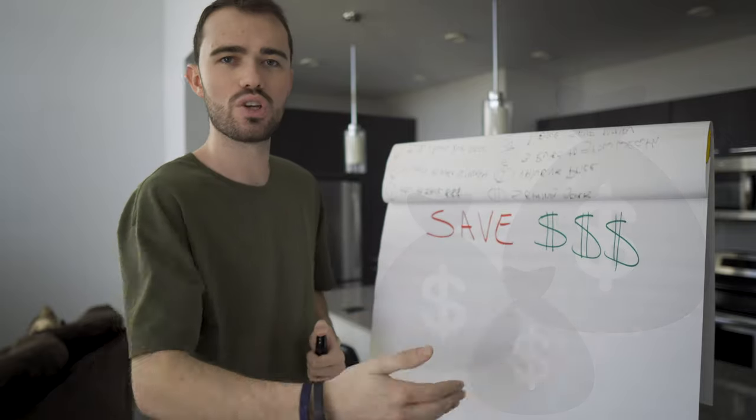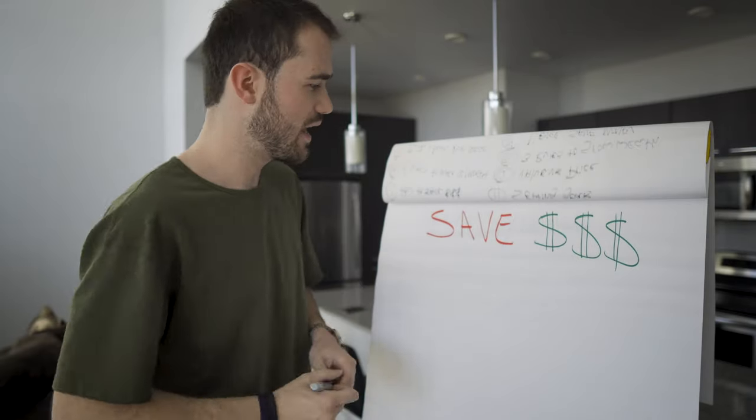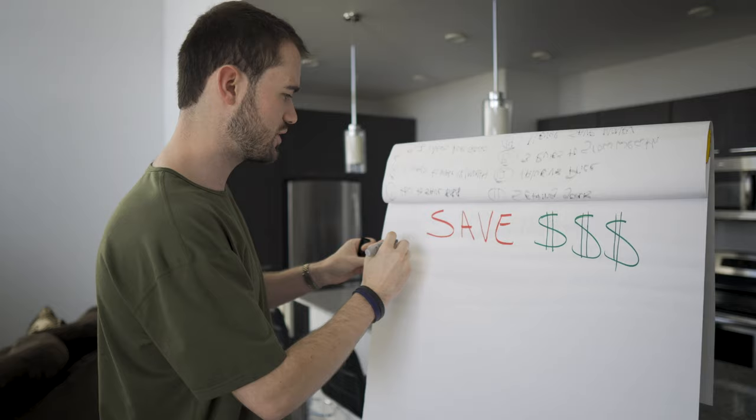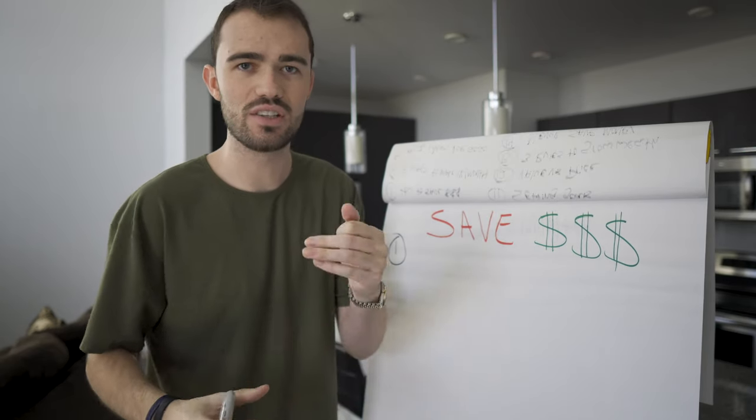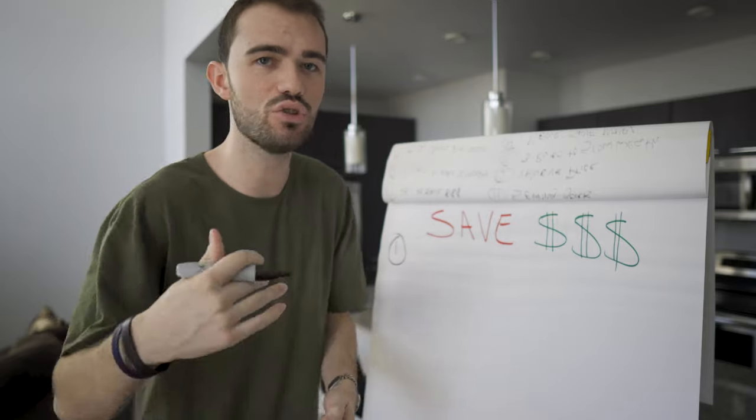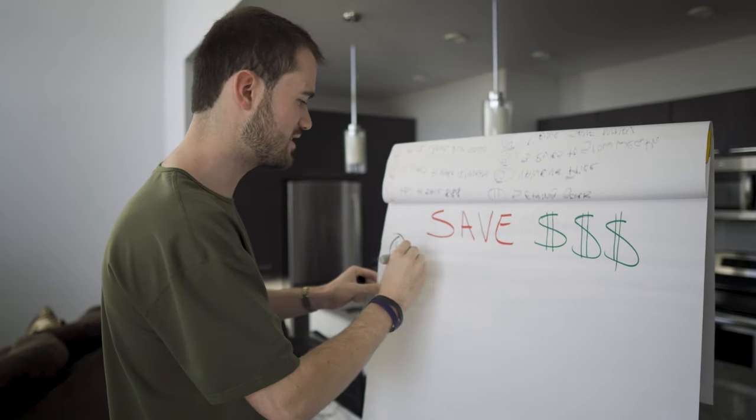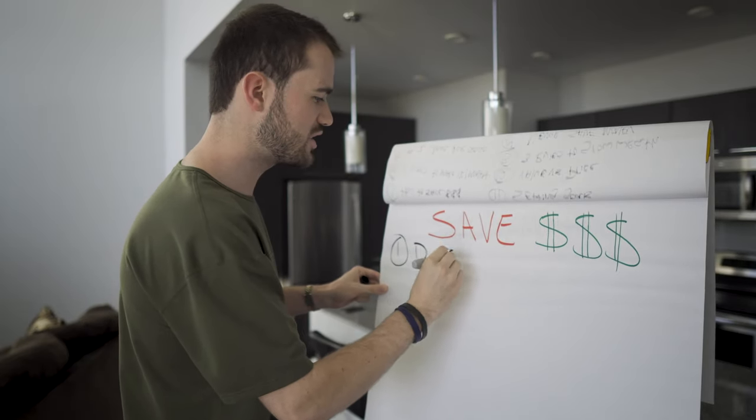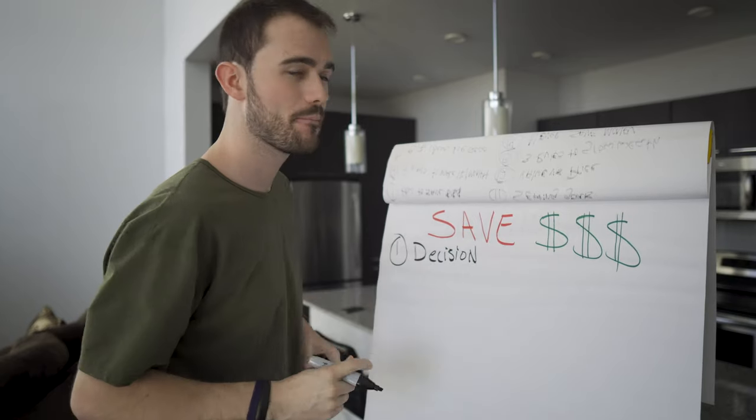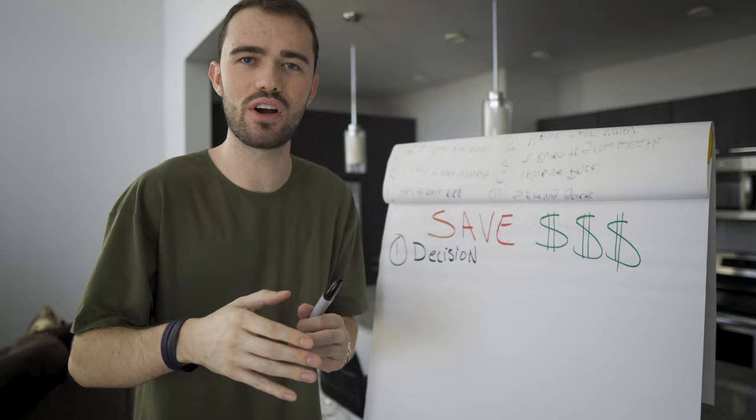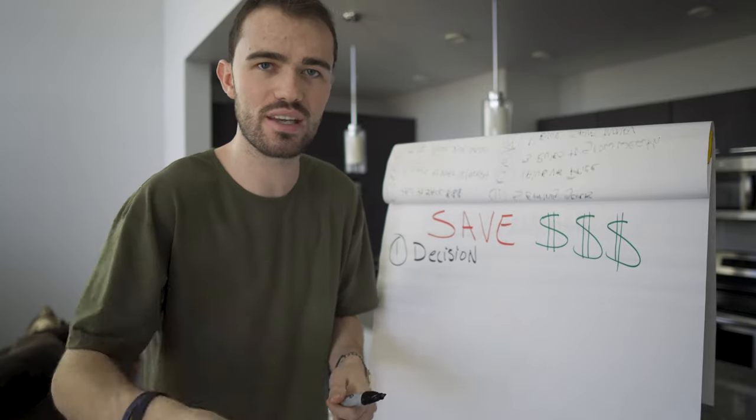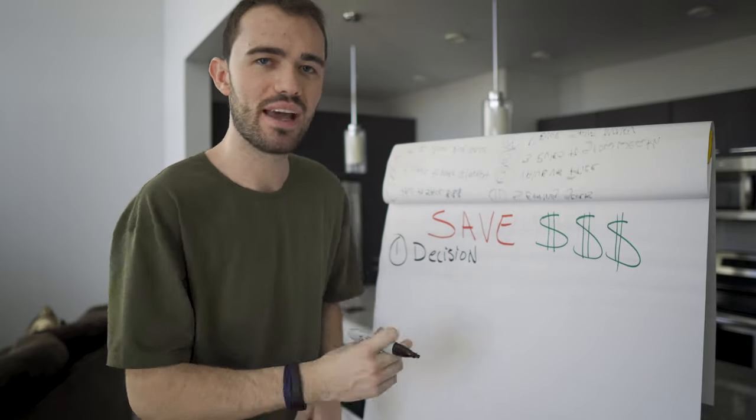Now first things first, when you are deciding to save more money, you have to do just that—you have to make a decision. So a decision is going to need to be made in order to actually save more money. You have to decide that I'm going to figure out how to save more money. I'm going to save more money in order to actually do that. That is the most important step in this entire process: actually making a decision to do it.